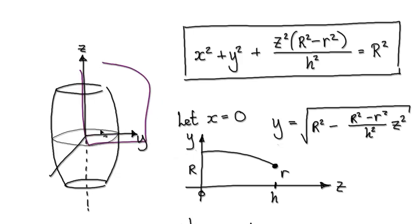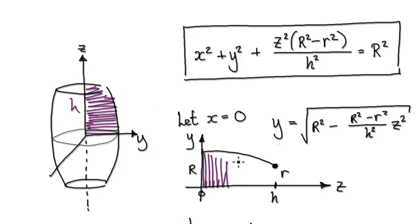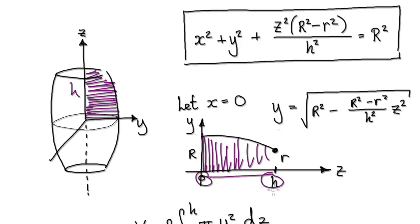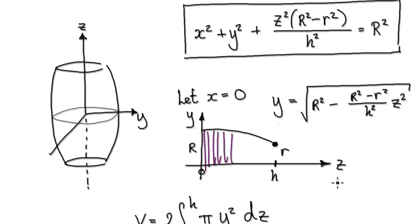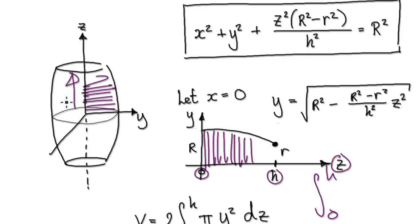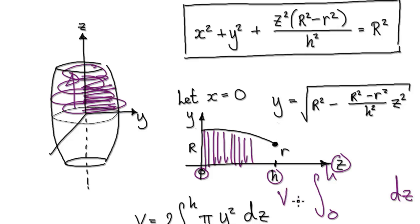We are summing up everything from 0 to H, moving in the Z direction, so it's going to be something dZ. By revolving at 360 degrees we are only getting half of the barrel, so the volume is equal to 2 times this. It will be pi times the radius squared at each step. The radius at each step is given by rearranging the ellipsoid equation to make Y the subject. We only consider the positive version.